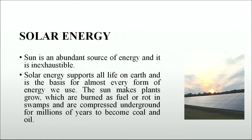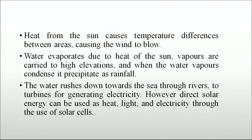The sun is an abundant and inexhaustible source of energy. Solar energy supports all life on earth and is the basis for almost every form of energy we use. The sun makes plants grow, which are burned as fuel or compressed underground for millions of years to become coal and oil. Heat from the sun causes temperature differences between areas, causing wind to flow. Water evaporates due to the sun's heat, vapors rise to high elevations, condense and precipitate as rainfall.